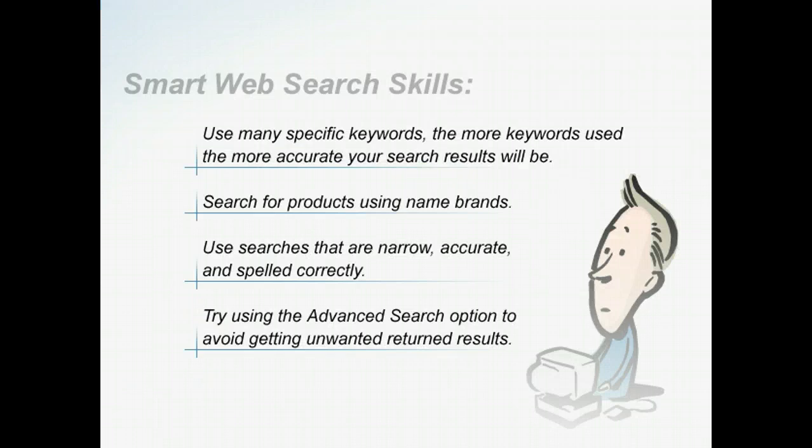What should you do to make sure your classroom is CIPA safe? First, you should educate yourself and your students. Learn how to improve your search skills and teach smart search skills to your students. This will help prevent accidental accessing of inappropriate material. It is also important to monitor all electronic communications, such as email and chat rooms. You need to be aware of what your students are accessing.